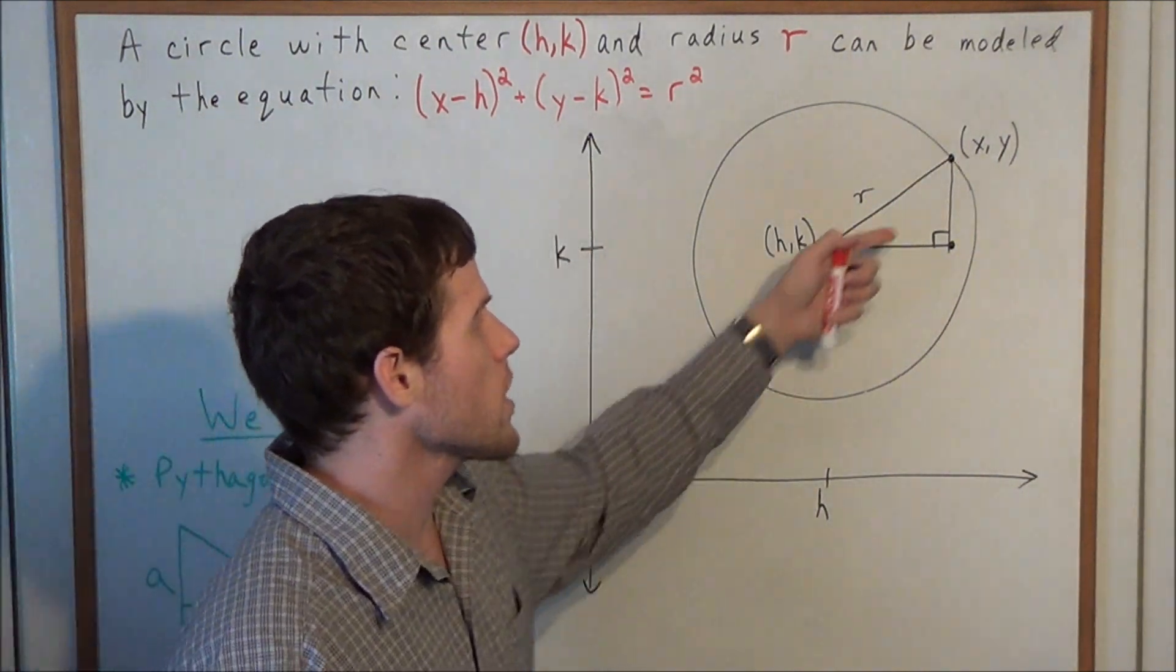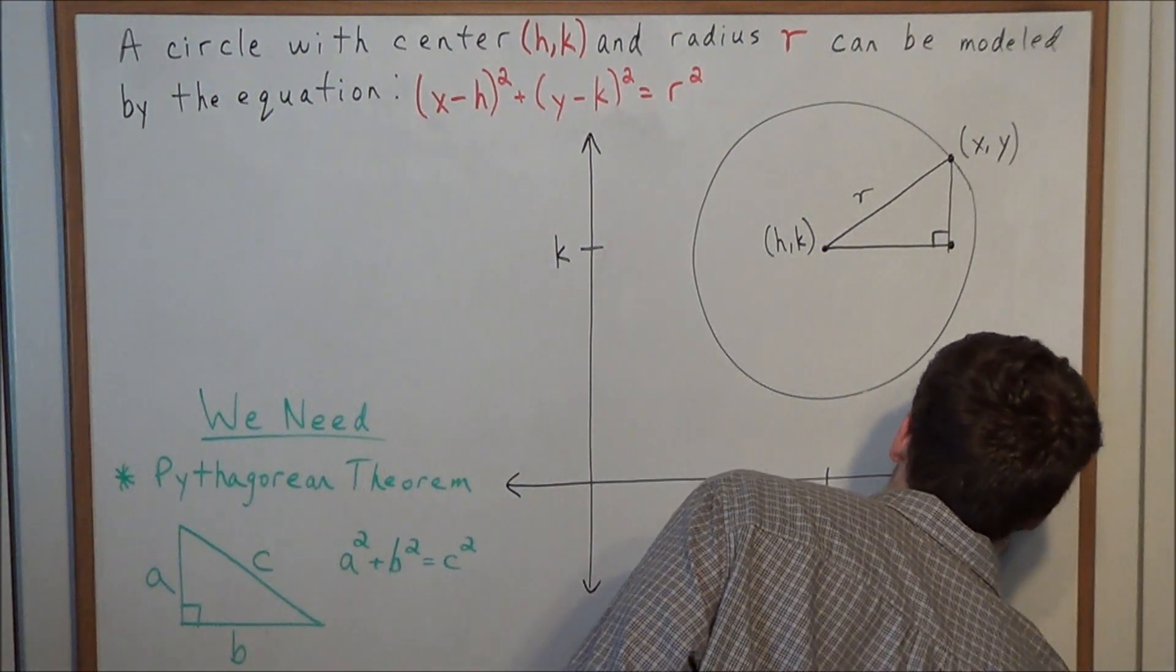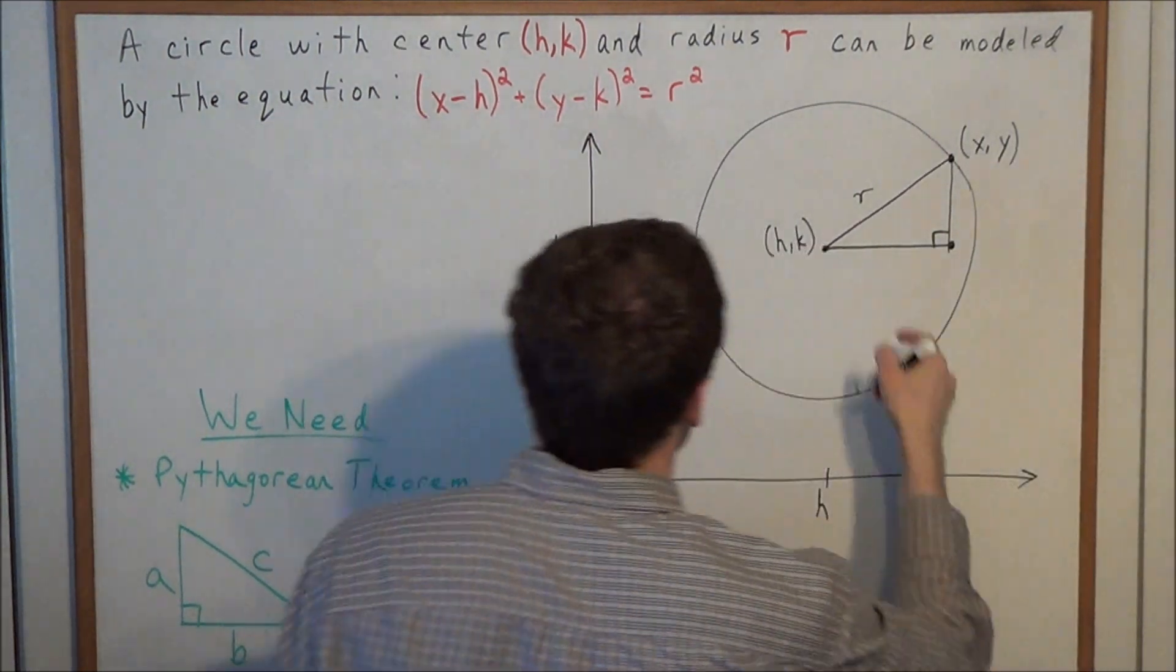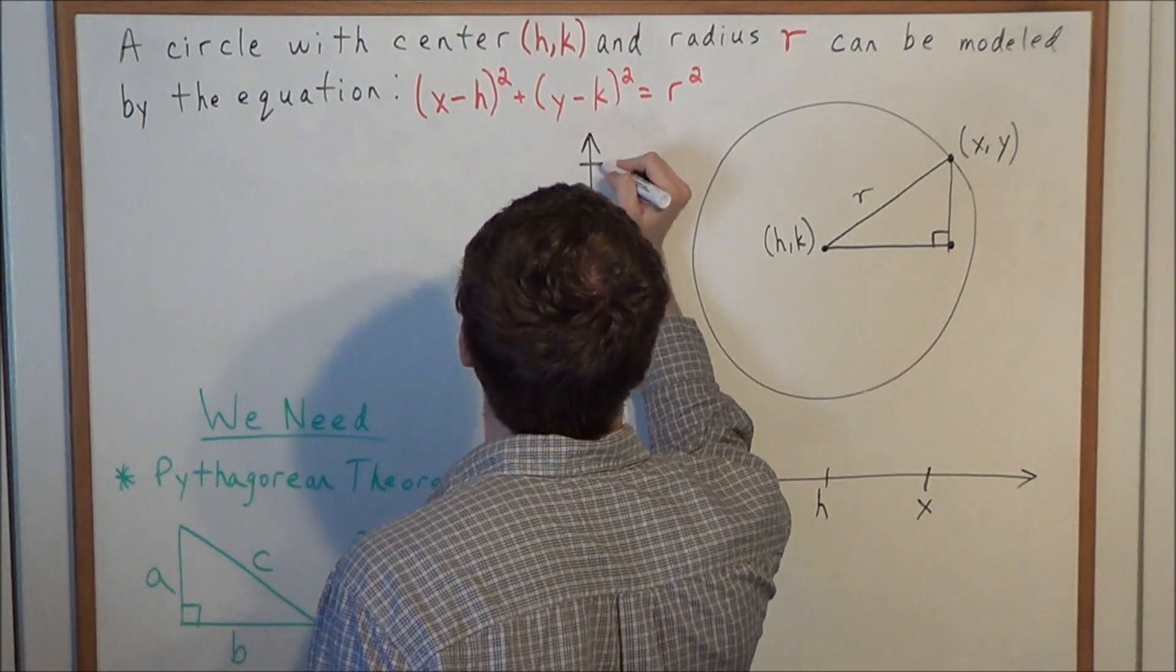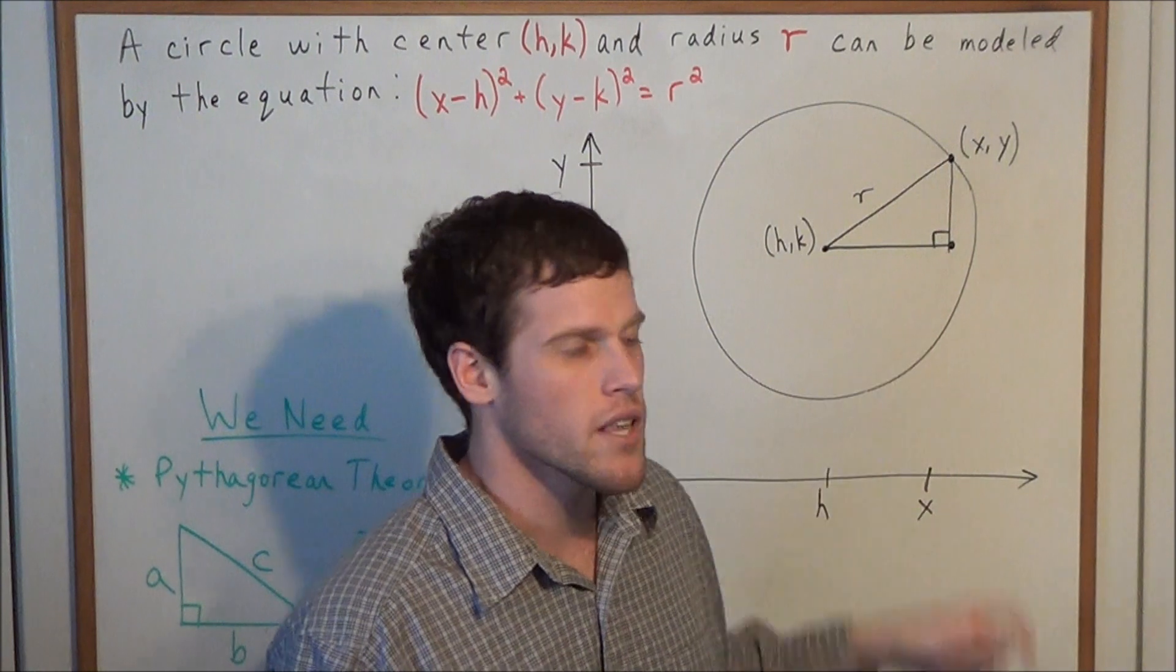Well now let's think about how do we get to the point (x,y). We travel a horizontal distance of x and we travel a vertical distance of y. So now we have a better idea of what the lengths of each of these legs are.